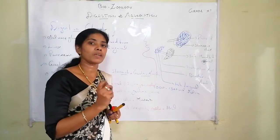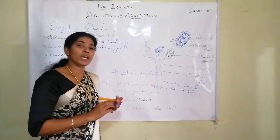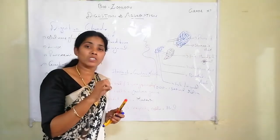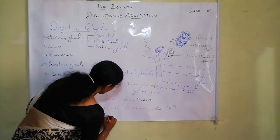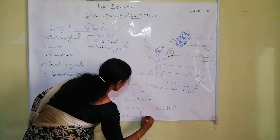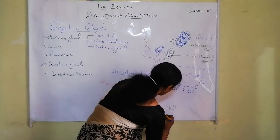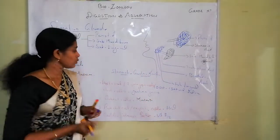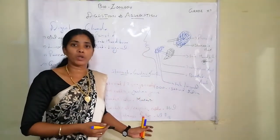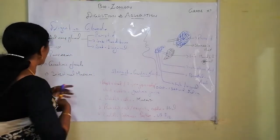The wall of the stomach also absorbs vitamin B12 with the help of an intrinsic factor known as Castle's intrinsic factor. So that is all about the salivary glands and gastric glands.